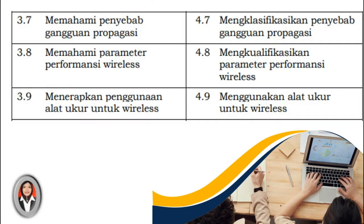KD 7 secara teori yaitu memahami penyebab gangguan propagansi, dan untuk KD 7 prakteknya yaitu mengklasifikasikan penyebab gangguan propagansi. Untuk KD 8 secara teori yaitu memahami parameter performansi wireless, dan untuk prakteknya di KD 8 yaitu mengkualifikasikan parameter performance wireless. KD 9 yaitu menerapkan penggunaan alat ukur untuk wireless, dan untuk KD 9 prakteknya yaitu menggunakan alat ukur untuk wireless.